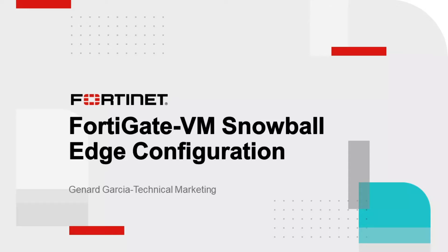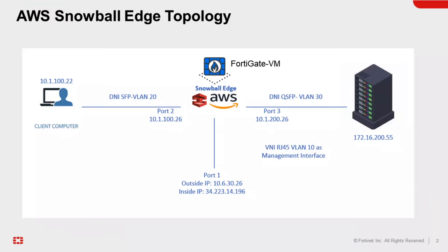Before we get to the actual deployment details of the AWS Noble Edge configuration, I would like to give you a quick overview of the network topology. As you can see here in this diagram, it has a PC client, a Noble Edge device with a FortiGate VM installed, and then the server on the right-hand side of the topology.